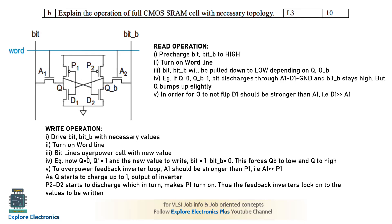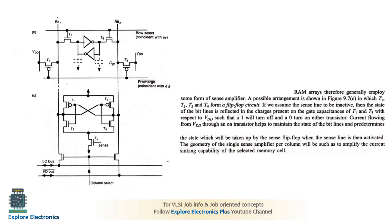Regarding transistor sizing, in order for Q not to flip during a read, D1 should be stronger than A1, and A1 should be stronger than P1. These transistor size ratios need to be maintained to obtain the correct stored value.